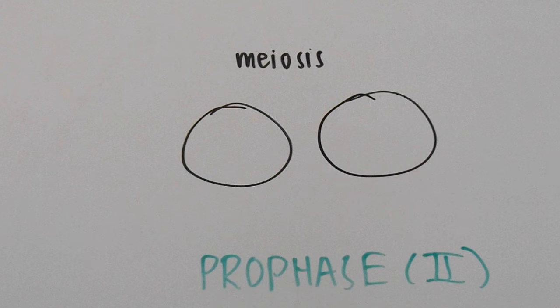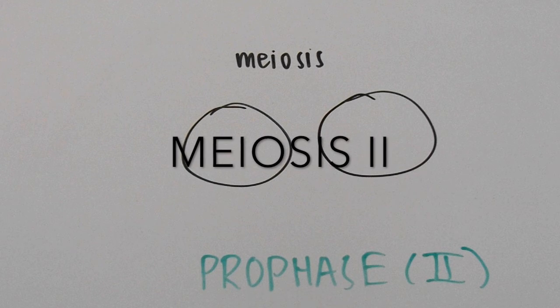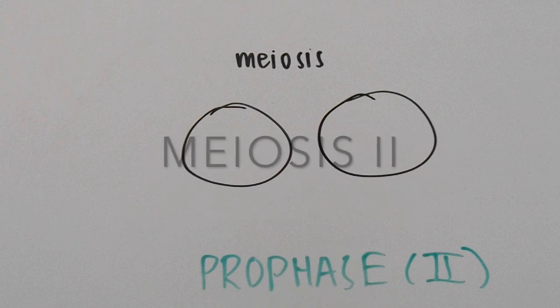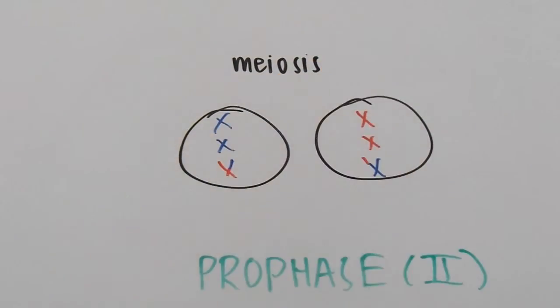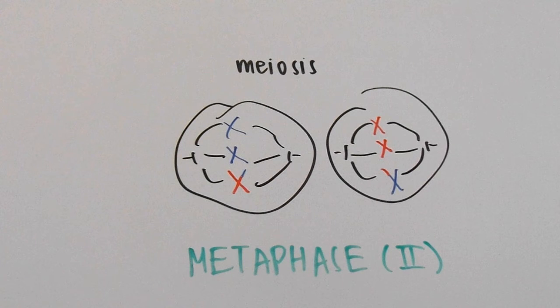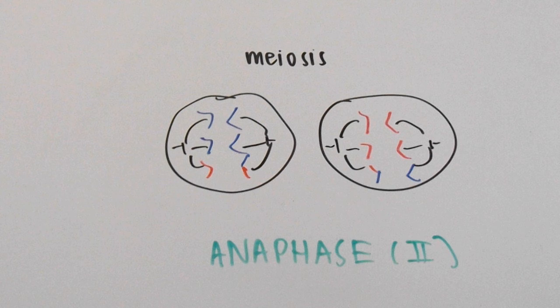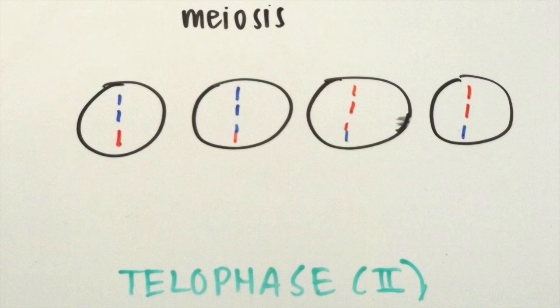But here's the best part. After this division in meiosis, what happens next is called meiosis II, which is exactly like mitosis. So the sister chromatids are paired up in prophase, they're still lined up at metaphase, and they're pulled apart at anaphase. At telophase, however, we see four different daughter cells as opposed to two identical daughter cells in mitosis.